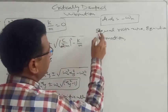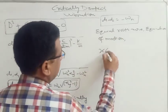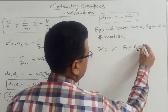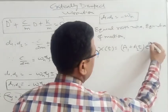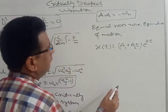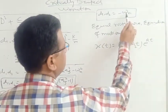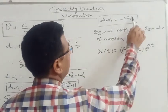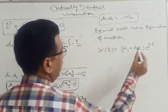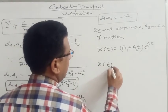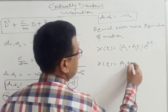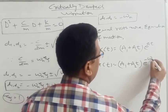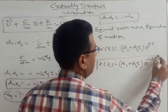When equal roots exist, the general solution of the equation of motion is x equals (a1 plus a2·t) times e^(a·t), where a is equal to minus omega_n. Substituting this, the equation of motion for the critically damped system becomes x = (a1 + a2·t) times e^(minus omega_n · t).